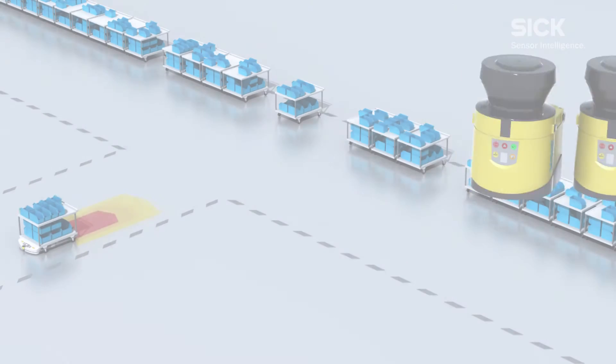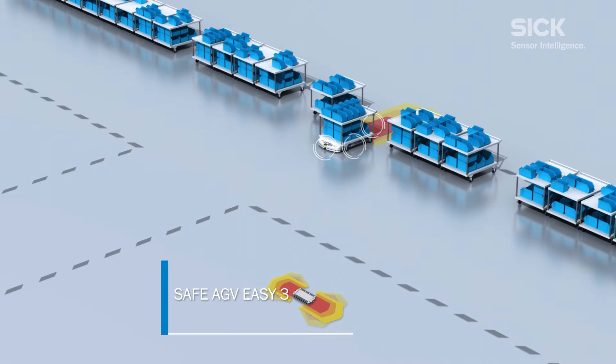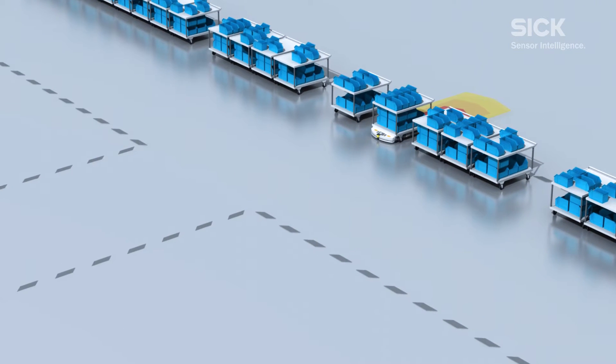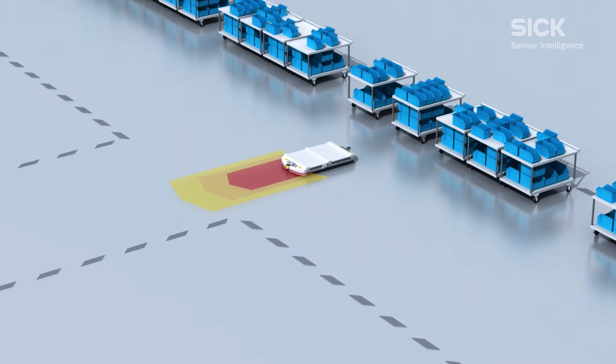For industrial trucks with two main directions of travel, two S300 professionals and one Flexi Classic safety controller are used. This makes your AGV flexible and safe.